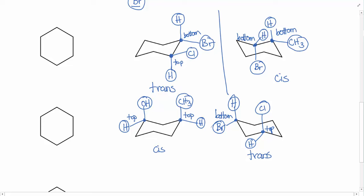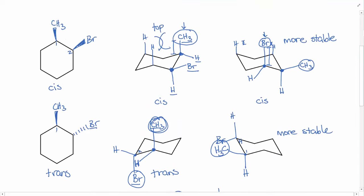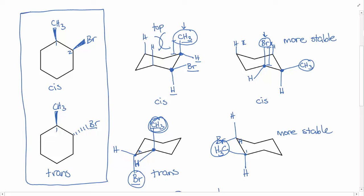You can use the same basic method to figure out whether any ring is cis or trans. If you're given the chair, look at the relative positions on each carbon: if both non-hydrogen substituents are closer to the top, it's cis; if both are closer to the bottom, it's cis; and if one's closer to the top and the other's closer to the bottom, then it's trans. If you're given a planar representation, just look: if both substituents are wedges or both are dashes, it's cis; and if you have one of each, the substituents are trans.